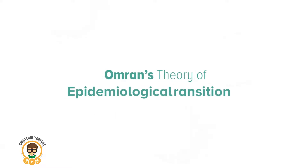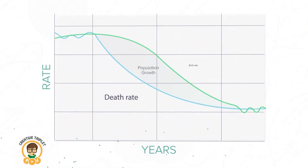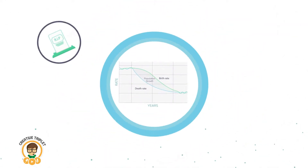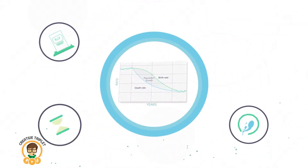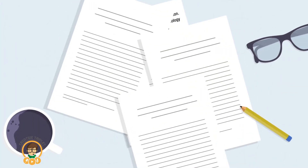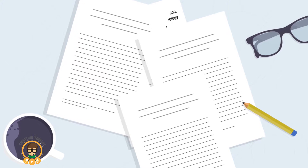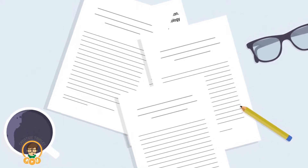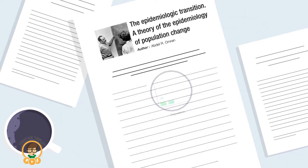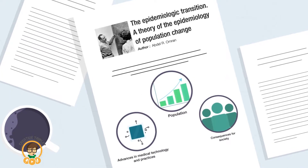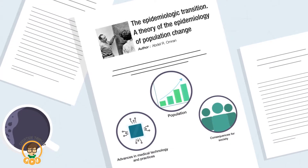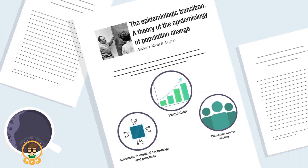The epidemiological transition describes the changing patterns of population demographics in relation to changing trends of mortality, fertility, life expectancy and health and disease. Abdul Omran is widely credited as formulating the theory of epidemiological transition after he published a paper in 1971 describing the three phases of population experiences as economic and technological development occurs and the consequences it has on society.